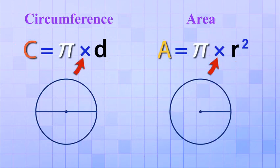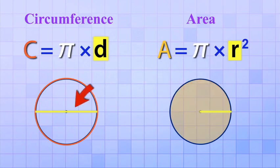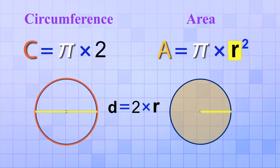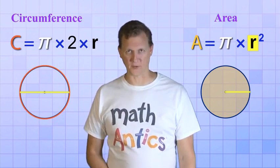In each of them, you're multiplying Pi by part of a circle to find either the circumference or the area. In the case of the circumference, you're multiplying Pi times the diameter. And in the case of the area, you're multiplying Pi times the radius squared. But do you remember the relationship between the radius and the diameter? Diameter is just 2 times the radius. So we could rewrite our formula for circumference like this. Circumference equals Pi times 2 times r. Ha! Now you see why it's so easy to get confused.